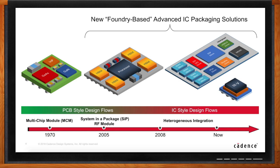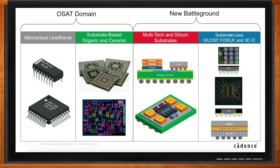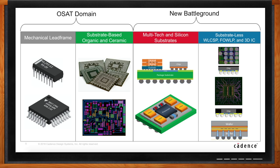So where is that battleground taking place? We see that based on foundries getting more involved in packaging, starting to potentially take some business away from the OSATs when it comes to cutting-edge packaging technologies — technologies that the industry calls 2.5D, where multiple die are placed on a silicon interposer, and then that silicon interposer gets placed on a package. The process of creating that silicon interposer typically takes place in a foundry-type environment, although the OSATs are starting to offer some competitive technology there.